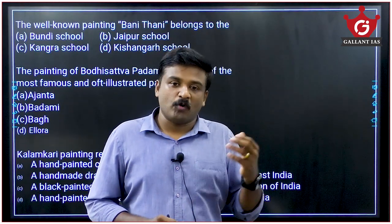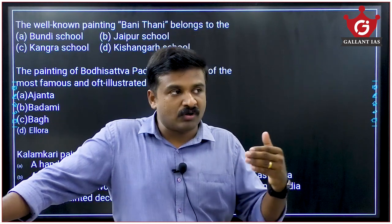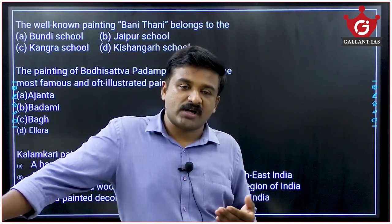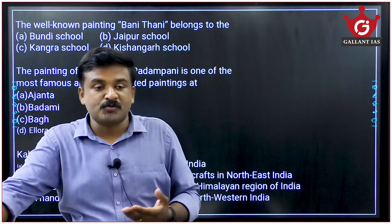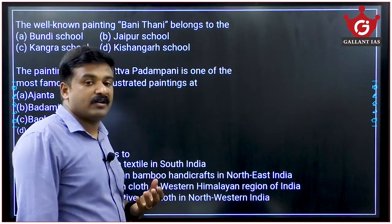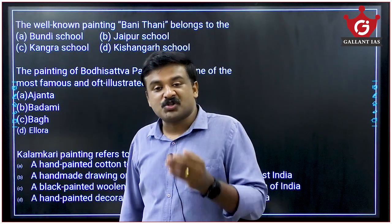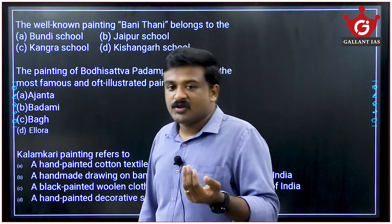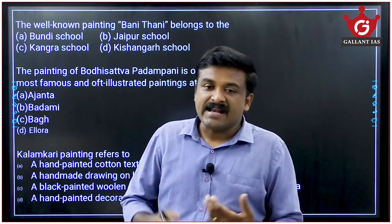You must cover the entire architecture from ancient to medieval to modern times, including post-independent architecture — Portuguese, French, and British architecture (Gothic, Victorian, Neo-Roman, and Indo-Saracenic styles). Post-independence, architects like Laurie Baker and Charles Correa are important. Also cover different schools of Indian painting: prehistoric, mural, and miniature painting; modern paintings including Company School, Raja Ravi Varma, Bengal School of Art; and folk paintings like Madhubani, Manjusha, Kalamkari, and Pattachitra.